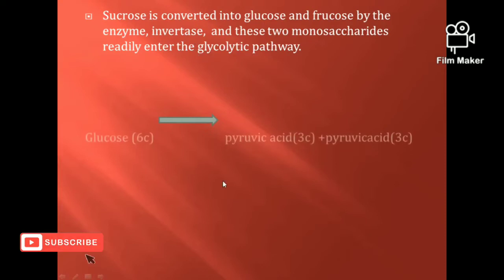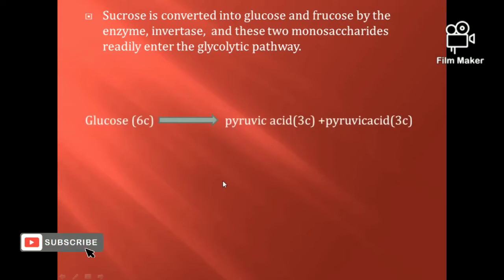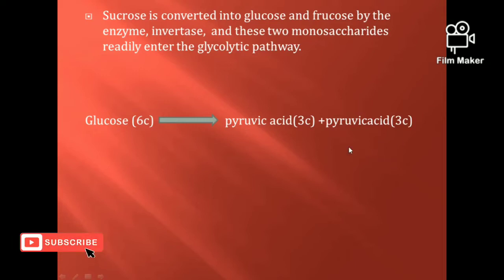Glucose has 6 carbon molecules. In the glycolysis process, it is broken down into two 3-carbon molecules of pyruvic acid. There are 2 molecules of pyruvic acid formed. This process takes place in 10 steps.